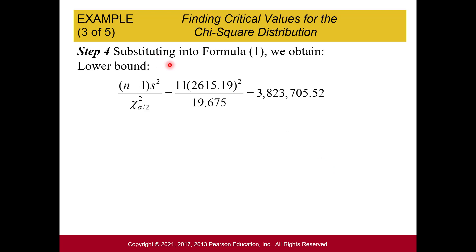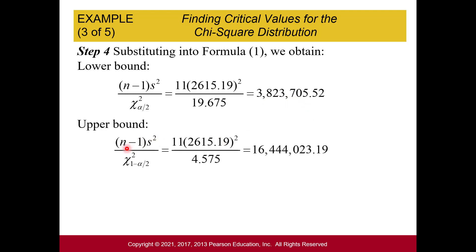Substituting into our formula: n minus 1 is 11, we use the sample standard deviation computed earlier, and the chi-squared value from the table was 19.675. Plugging that in gives a lower bound of $3,823,705.52. For the upper bound, we use the chi-squared value of 4.575 and get $16,444,023.19.